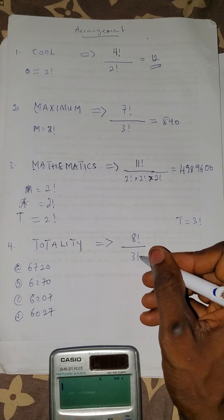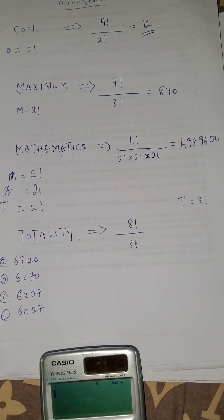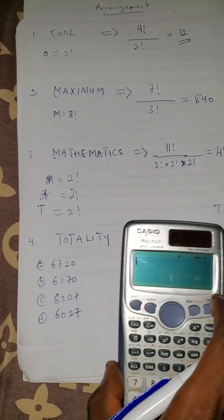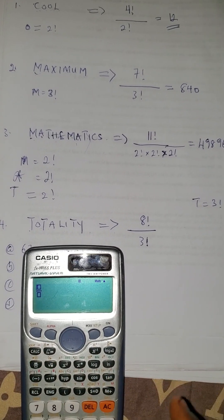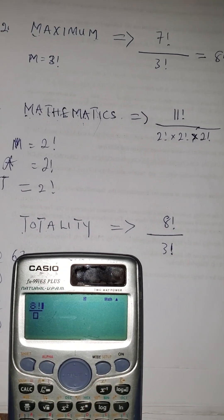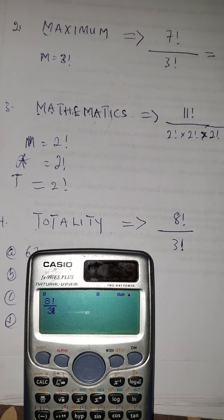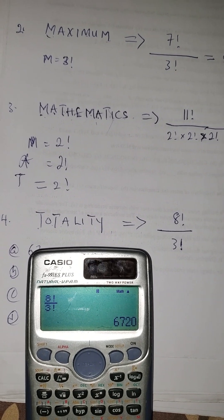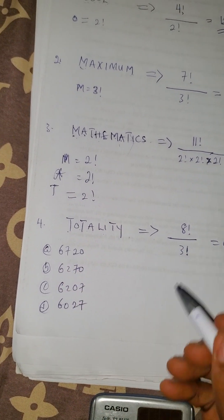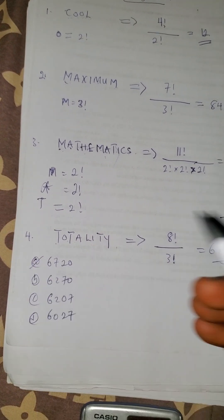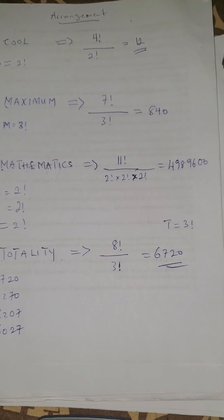The other letters do not appear more than once, so we only account for T. We have eight factorial over three factorial, and the answer is 6720. So the answer is option A. This is how you calculate the number of ways a word can be rearranged.